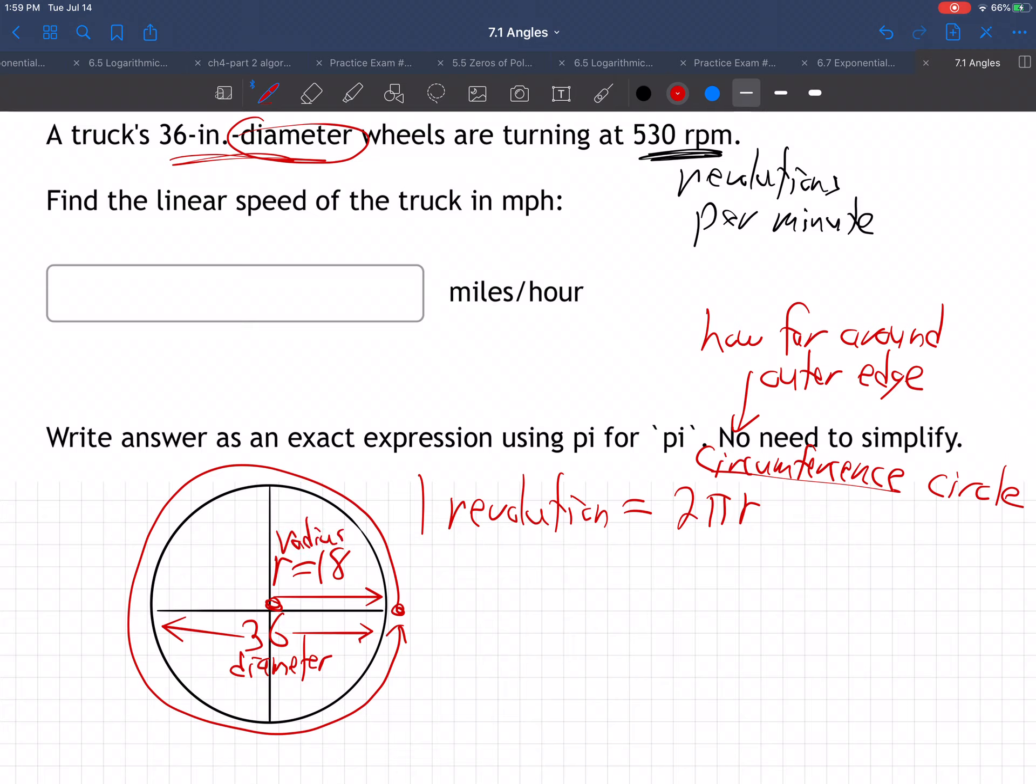Radius is from the middle to the edge. So one revolution equals 2 pi times 18, in other words, 36 pi inches, because it's 18 inches for the radius, because it was 36 inches for the diameter. So we got one revolution is 36 pi inches. Every time that tire goes all the way around, it covers 36 pi inches on the ground.